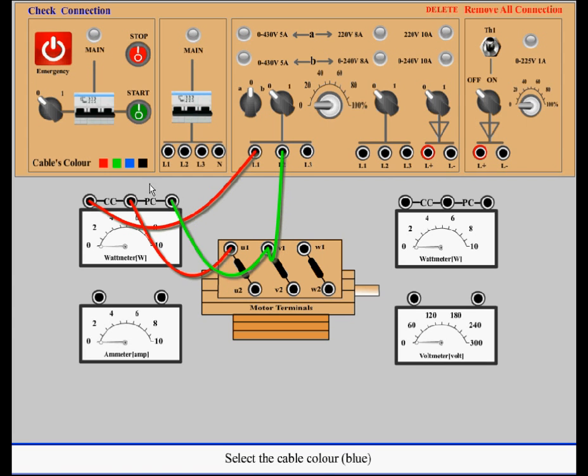Select the cable color blue. Connect L3 with CC of the wattmeter on the right side. Connect the common point of the wattmeter with W1.